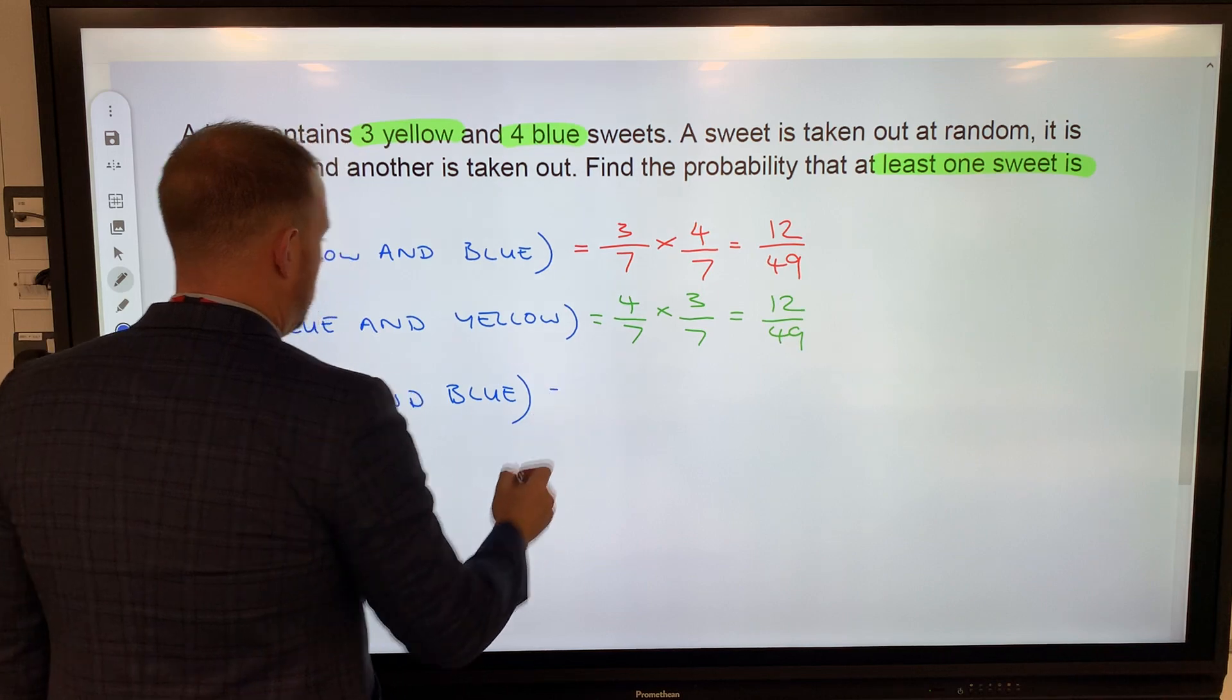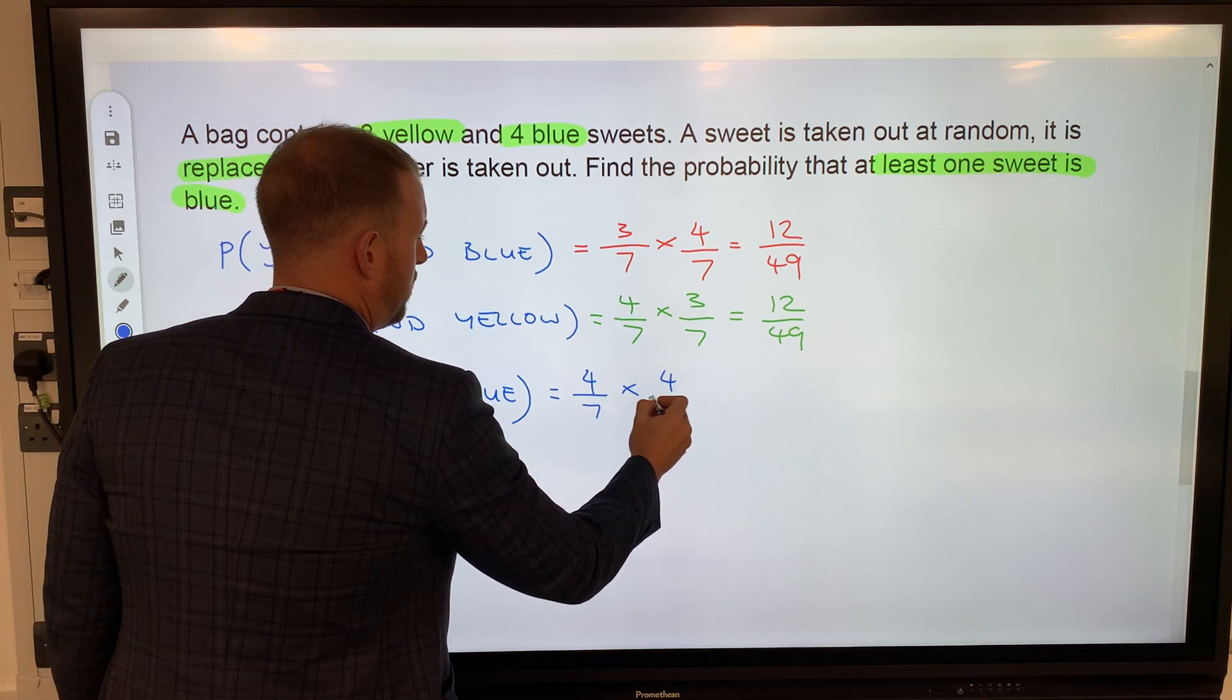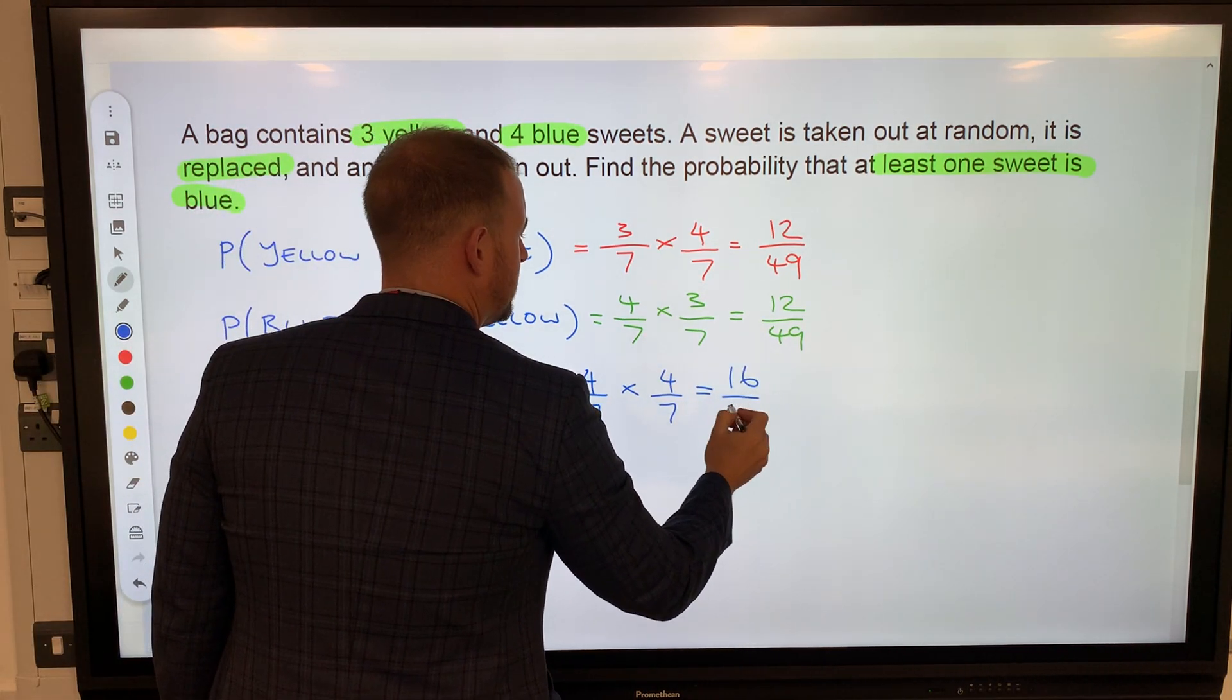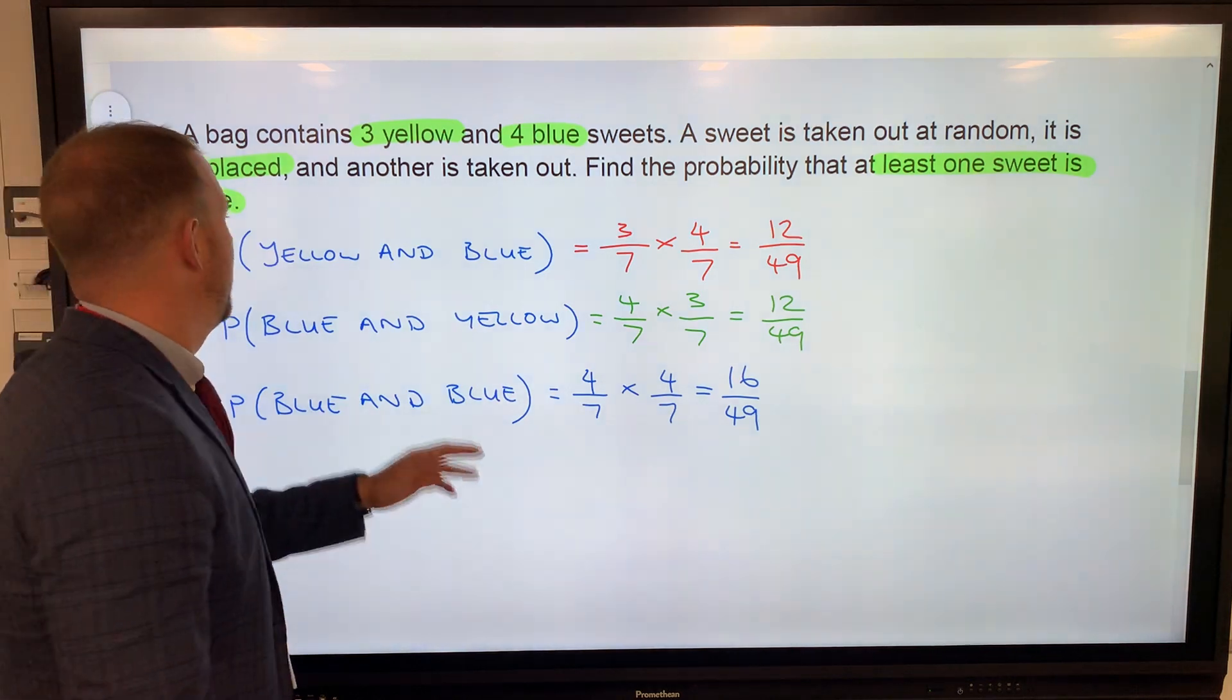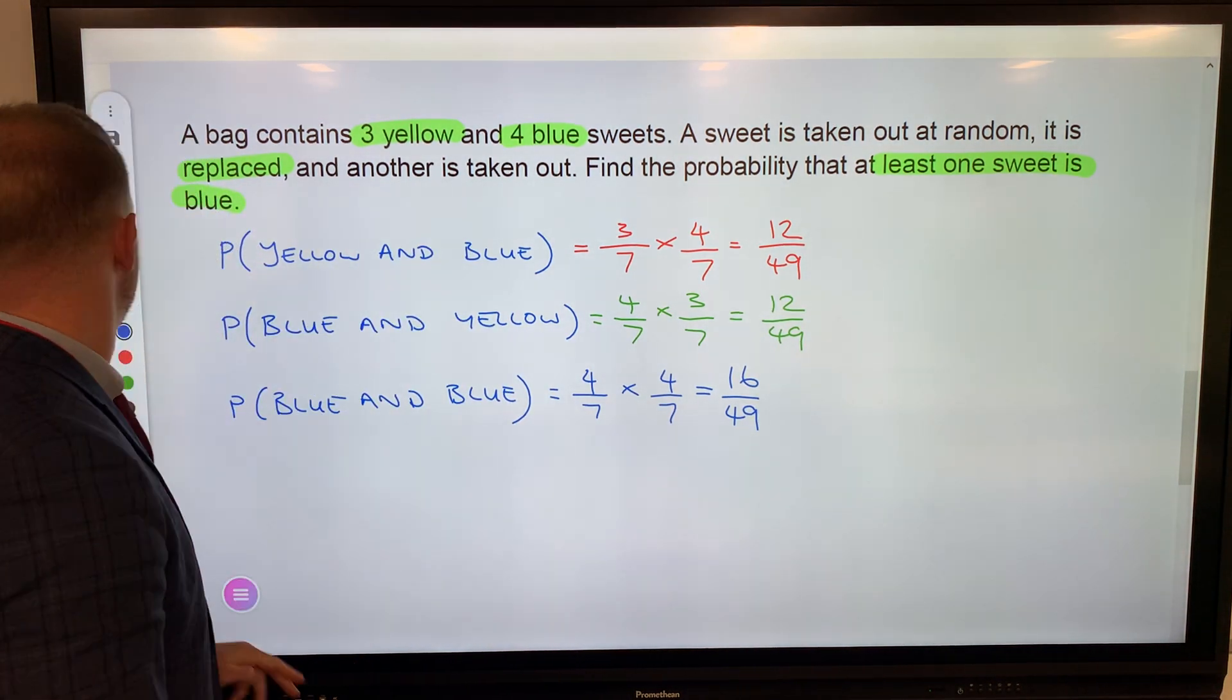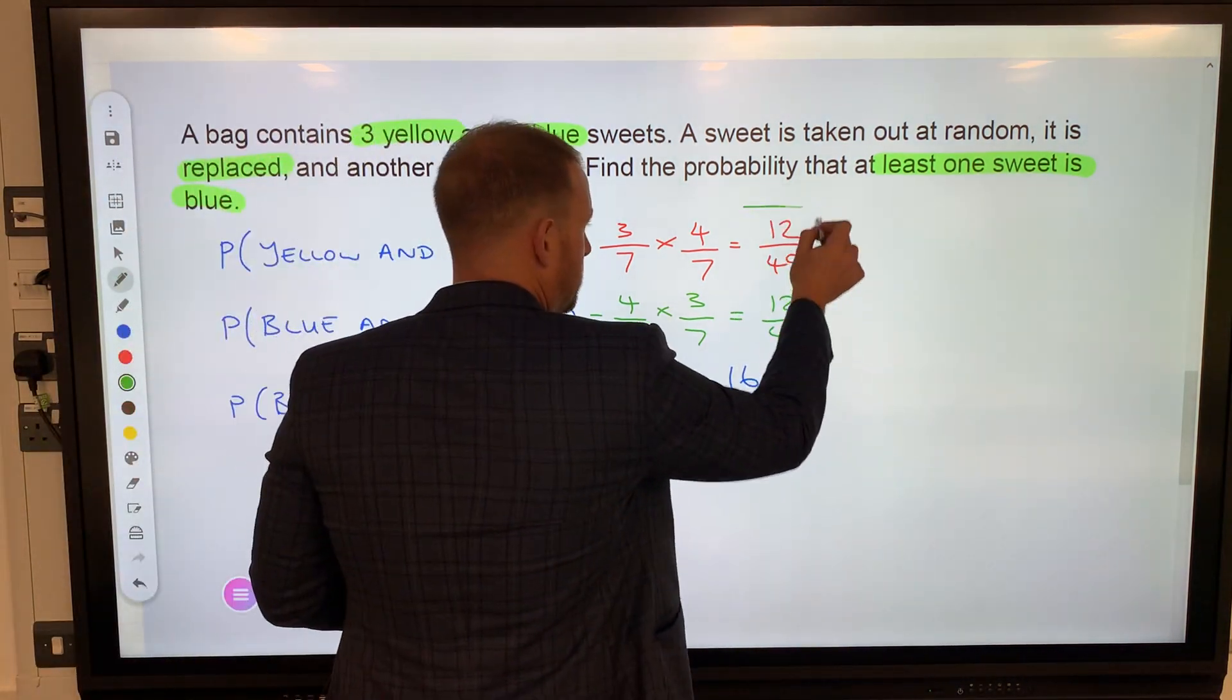Probability of blue and yellow: blue is 4/7, the sweet is replaced, then to select a yellow one would be 3/7—same number, 12/49. Probability of blue and blue: blue is 4/7, and another blue would be 4/7. 4 times 4 is 16, 7 times 7 is 49.